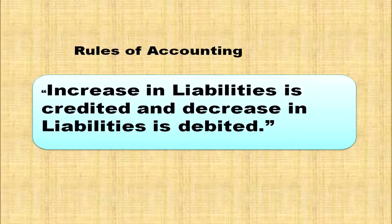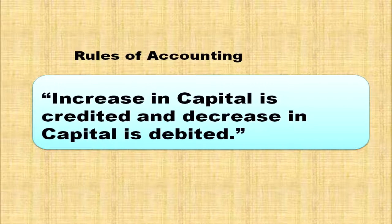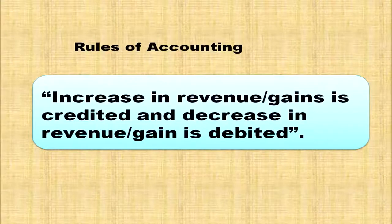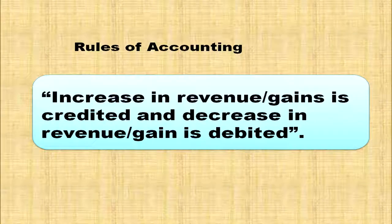When discussing liabilities: Increase in liabilities is credited and decrease in liabilities is debited. Increase in capital is credited. Decrease in capital is debited. Increase in revenue is credited. Decrease in revenue is debited. Either revenue or gains — when increased, it is credited; when decreased, it is debited.